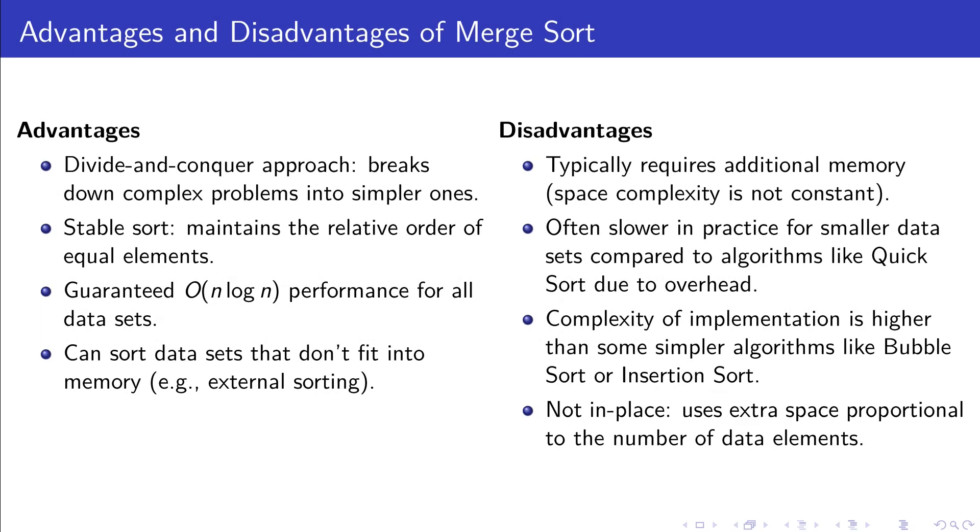Exploring the Merge Sort algorithm, we can identify several key advantages. Firstly, Merge Sort uses a divide-and-conquer strategy, effectively breaking down complex problems. It also stands out as a stable sorting method, ensuring consistency by maintaining the original sequence of equal elements. Furthermore, its performance is predictably consistent, operating within a time frame that can be described as n log n. For those working with extensive datasets that might exceed available memory, Merge Sort comes in handy, especially for external sorting.